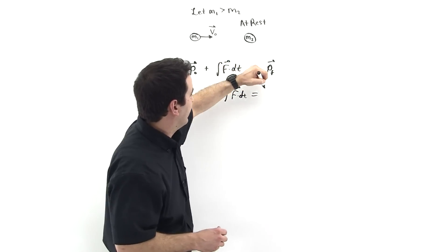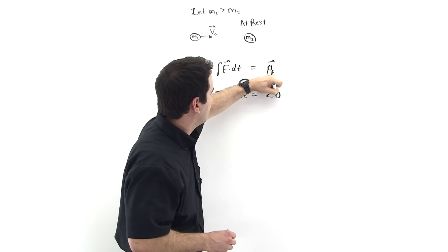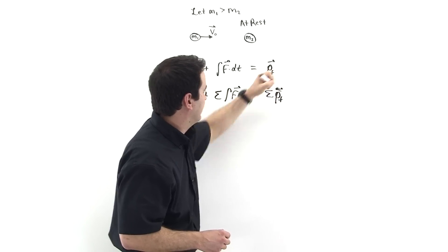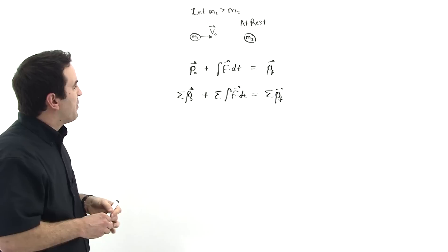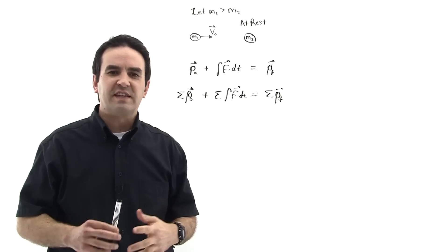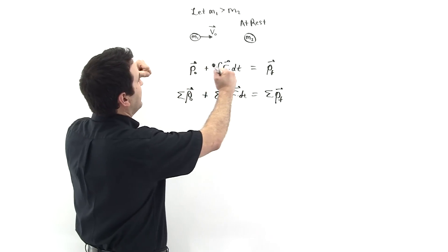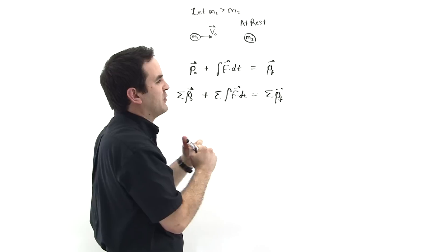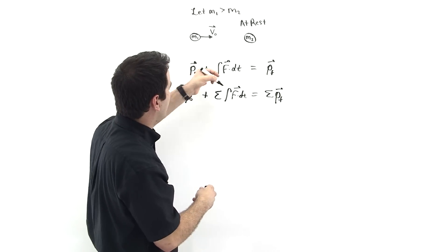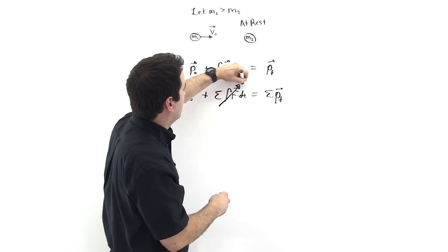We're going to see in a moment that that goes away, and that's equal to sigma p-final, like this. But only external forces can add momentum to a system, and so these two particles are interacting with one another, and so those are internal forces, and so this term is going to go away.